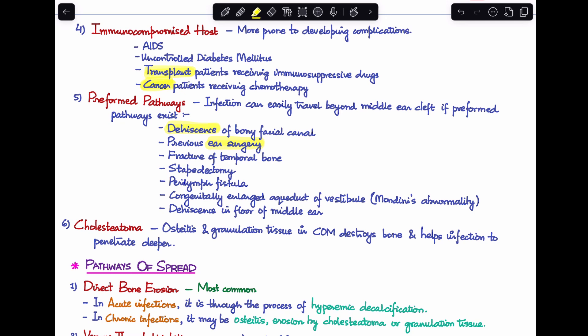So these are all preformed pathways or defects that help in making the infection travel easily beyond the middle ear cleft and cause complications of CSOM. Last factor is the development of cholesteatoma. Now in cholesteatoma we usually end up seeing osteitis and granulation tissue formation. This destroys bone and helps in spreading of infection and leads to a deeper penetration, and that leads to more development of complications.